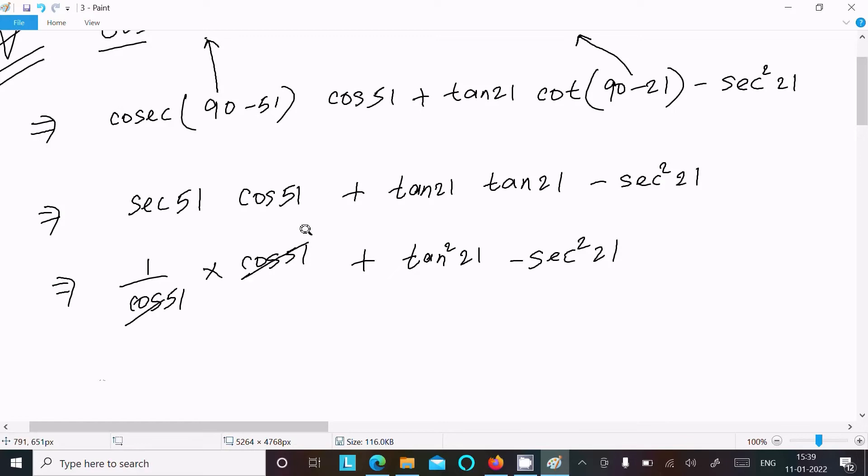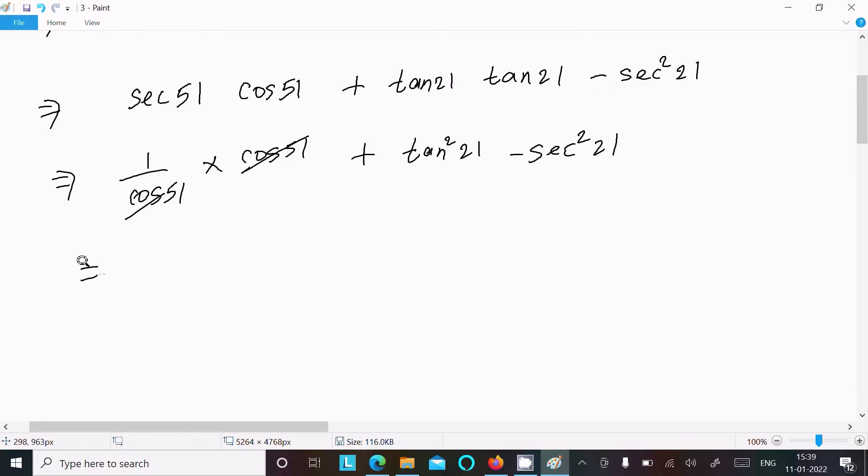tan² 21°, this cancels, and now you can get here 1 + tan² 21° - sec² 21°.